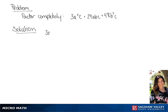We are going to factor 3a squared c plus 24abc plus 48b squared c. We see that there is a common factor in all of these terms, which is 3c.